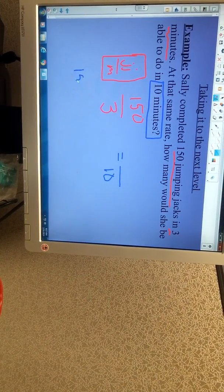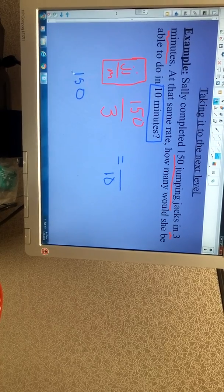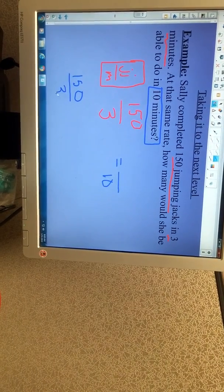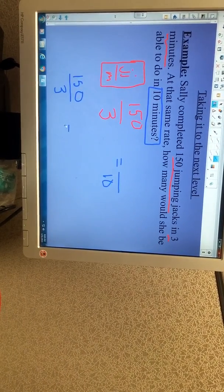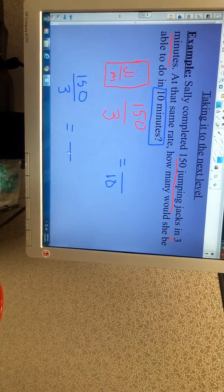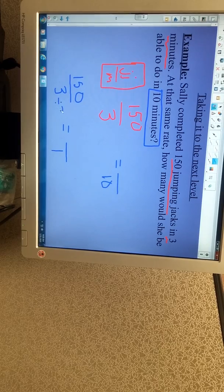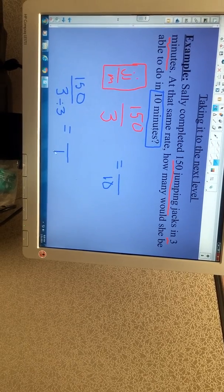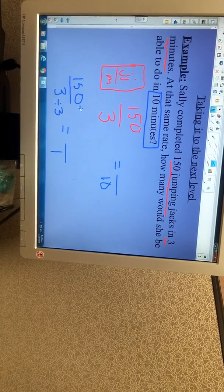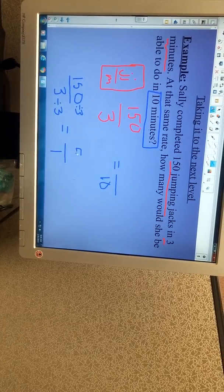But if we know she can do 150 jumping jacks in 3 minutes, that means we can find out how much she does in 1 minute. And that's really going to help us. So to find out how much she does in 1 minute, we're going to divide. 3 divided by 3 gives us our 1. 150 divided by 3 gives us 50. So now we can take this information to help us answer the problem.